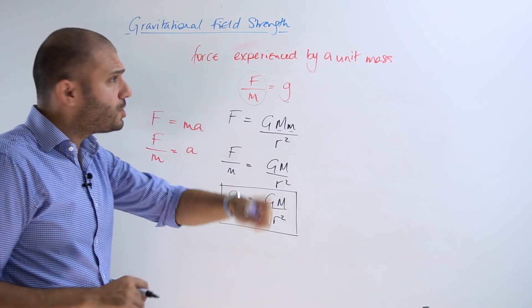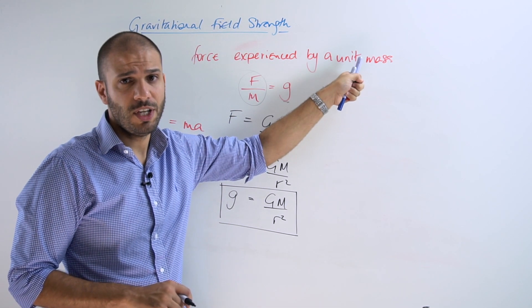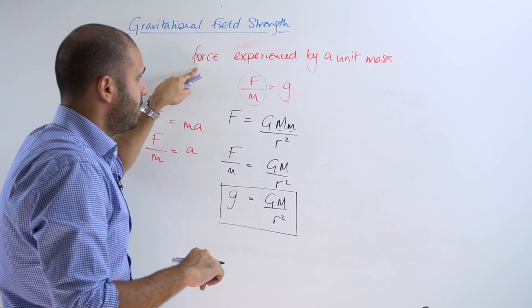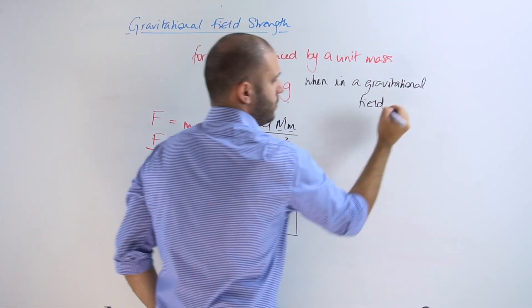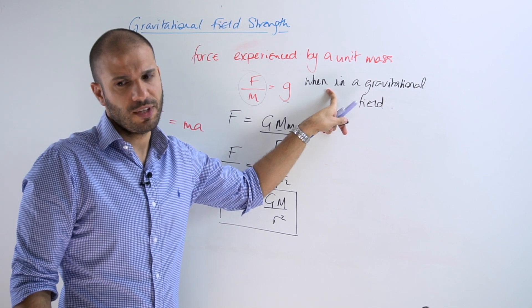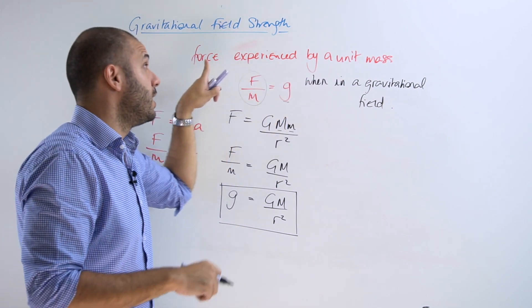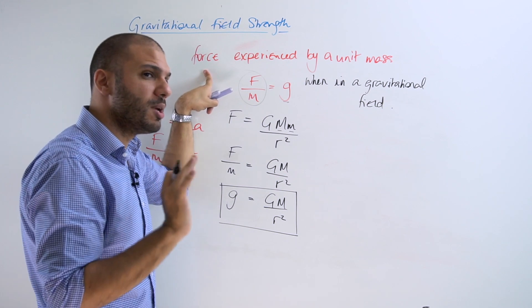So recap, if you're asked for a definition for gravitational field strength, this is the definition but I would add to all of this: it is the force experienced by unit mass when that mass is in a gravitational field, because you can get mass experiencing a force because someone or something is pushing it.